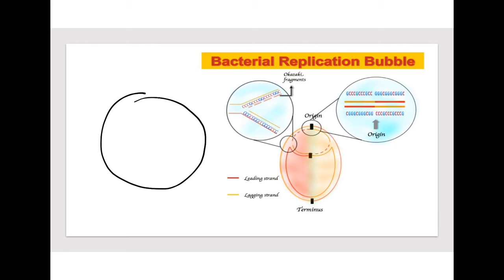How bacteria replicate and how eukaryotes replicate may have some differences in the machinery, but the process is very similar. The point where replication starts is called the origin of replication. In eukaryotes, we have multiple origins of replication, whereas bacteria, since it's circular, only has one origin of replication.